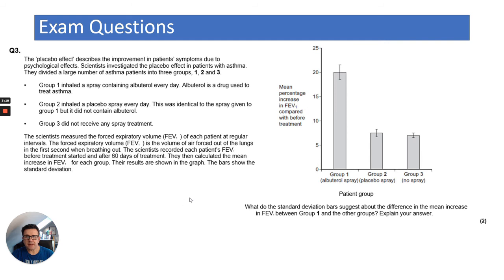Next question. So this is showing a graph with some standard deviations. I'm just going to talk briefly. I'm not going to go through all of this question, but just to say, look at group one. So group one is where people inhaled albuterol every day. And it's a drug used to treat asthma. And you can see that looking at the graph, the mean percentage increase in FEV1 compared with before treatment. So group two is placebo. Group three is no spray at all or no treatment at all. So the greater the FEV1, the better you can breathe, basically.